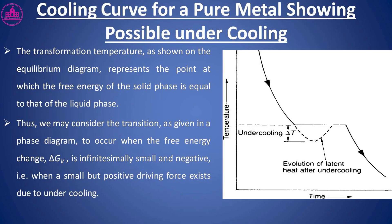The cooling curve for a pure metal shows possible undercooling. The transformation temperature as shown on the equilibrium diagram represents the point at which the free energy of the solid phase equals that of the liquid phase. We may consider the transition to occur when the free energy change ΔG is infinitesimally small and negative — that is, when a small but positive driving force exists due to undercooling.